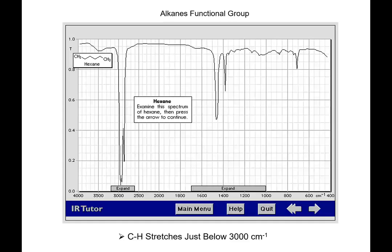So if you look at an alkane like hexane and look at its infrared peaks, you'll see there really aren't a whole lot. There are peaks just a little bit below 3,000 reciprocal centimeters, or wave numbers—and those are pretty much the ones we're going to look at. When I take an infrared spectrum of a molecule and I see peaks below 3,000, it tells me I have alkanes—I've got sp³ hybridized C-H bonds.